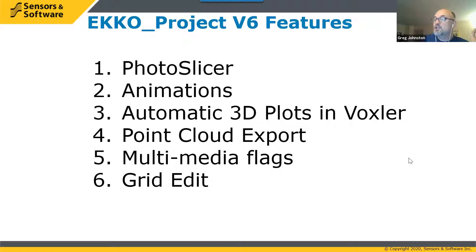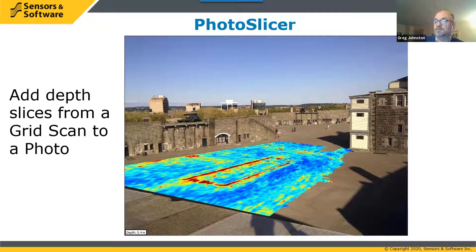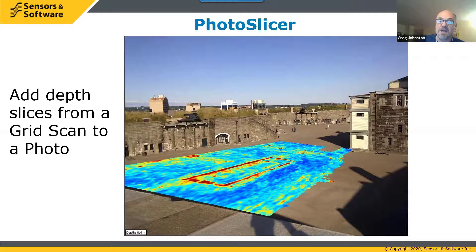The first thing I want to talk about is a feature called Photoslicer. I think this is the new feature I'm most excited about because I think it will have the most impact on our users. Photoslicer allows the user to overlay a GPR depth slice image onto a photograph. Here's an example that shows archaeology data. If you look at the depth slice, you can see the outline of a building — those are the foundation walls. Showing the depth slice on a photograph of the GPR site is a powerful way of communicating to others what the GPR discovered in the subsurface.